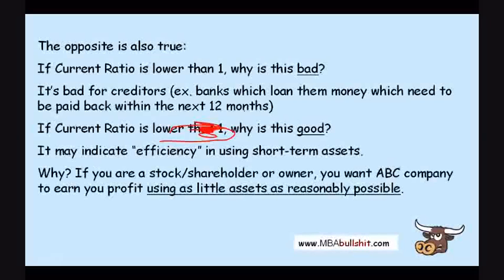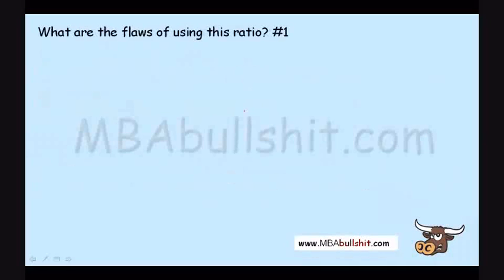If you are a stockholder or shareholder, you will want ABC Company to earn you a profit using as little assets as reasonably possible. Now, what are the flaws in using this ratio?